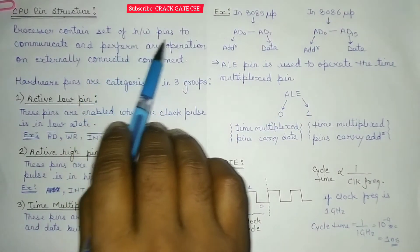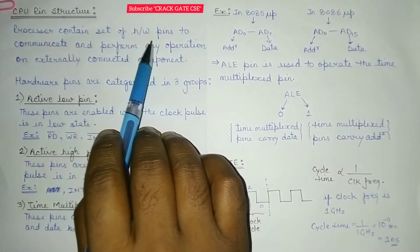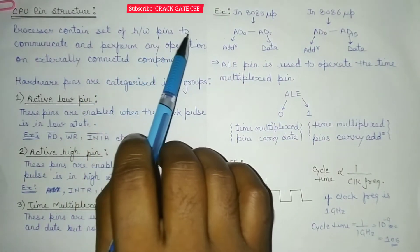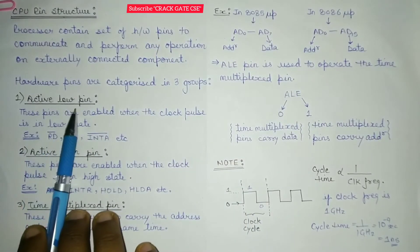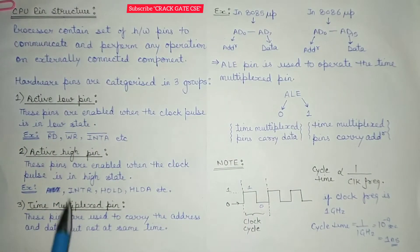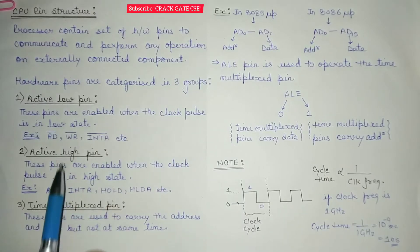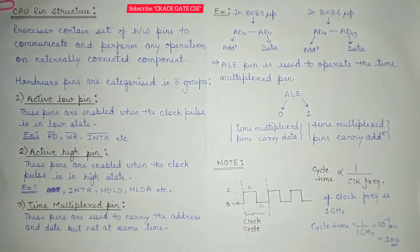These hardware pins are categorized into three groups: active low pins, active high pins, and time multiplexed pins. Before moving on to the details of these pins, let us quickly have an idea about the clock cycle.